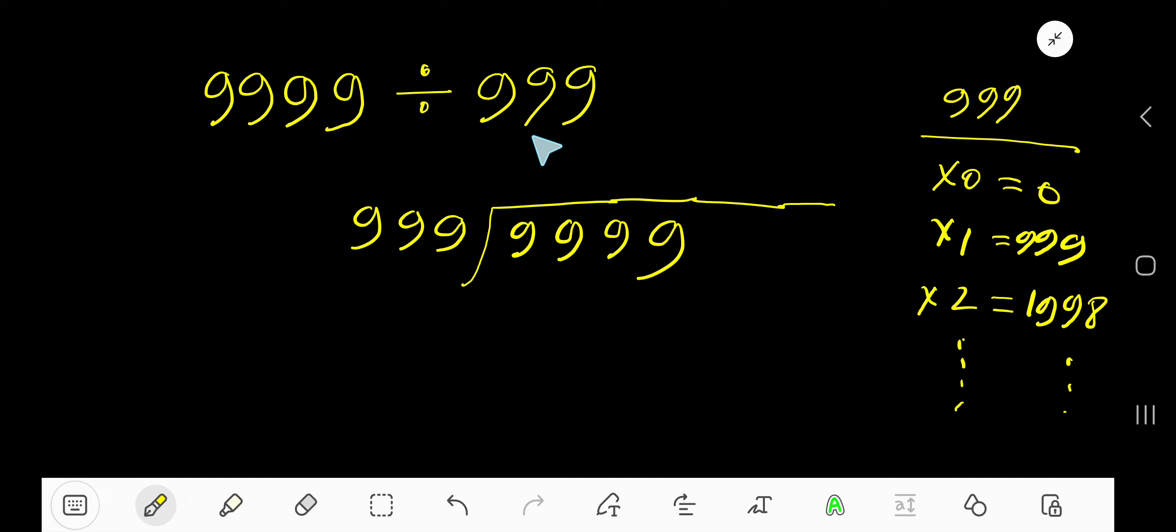9999 divided by 999. The divisor is 999, so we need the multiplication table of 999. 999 times 0 equals 0, 999 times 1 equals 999, then 999 times 2 equals 1998. To find the multiplication table of 999, just add 999 with the previous step: 0 plus 999 equals this, then 999 plus 999 equals 1998.